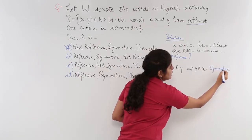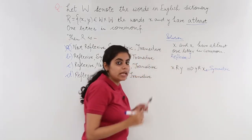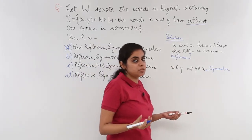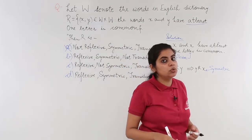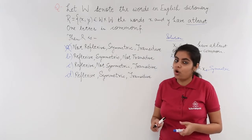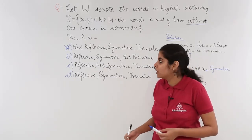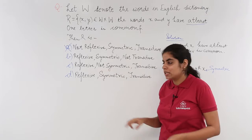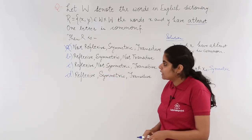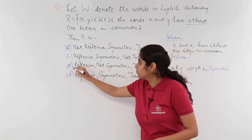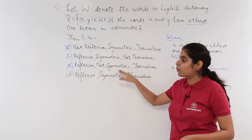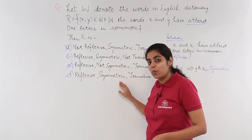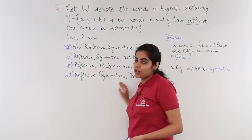I have already confirmed it is reflexive and symmetric. Looking at the options, option C says 'not symmetric,' so I can strike off option C. Now I am left with two options — option B and option D — so let's check whether this relation is transitive or not.